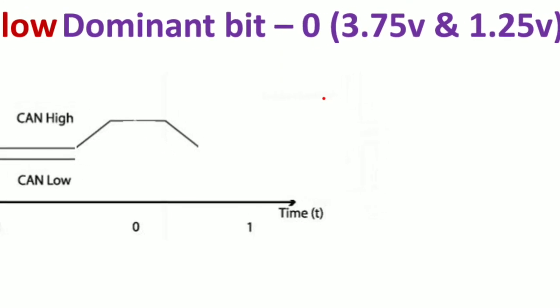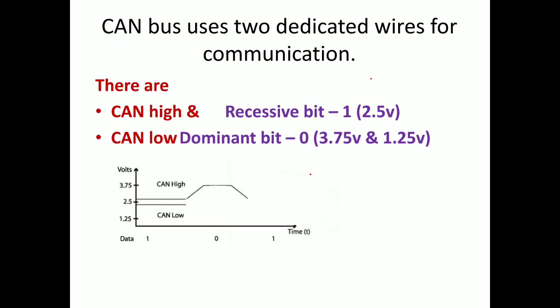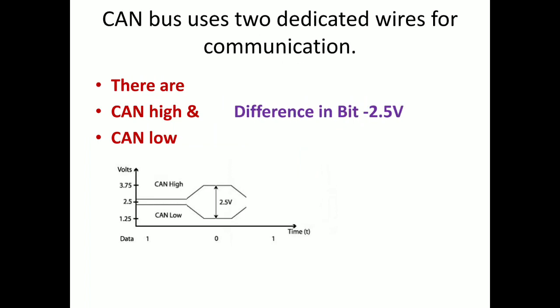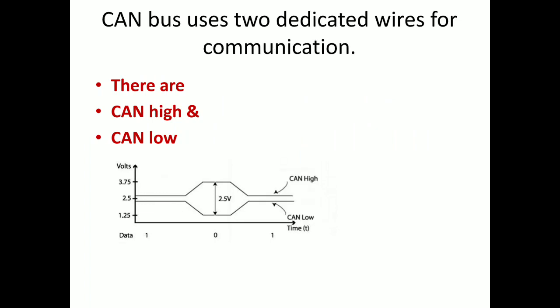Dominant bit (zero) means CAN low will be at 1.25V and CAN high at 3.75V. Recessive bit (one) will accommodate only 2.5V. The potential difference between CAN high and CAN low is 2.5 volts.